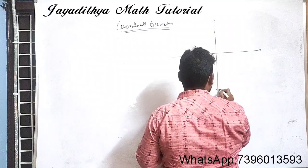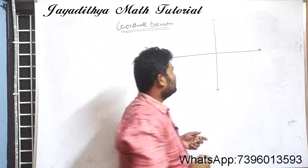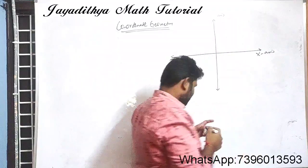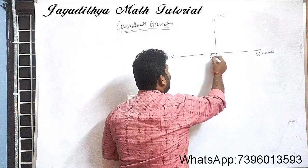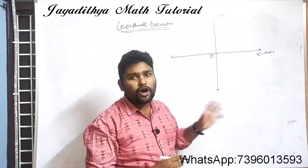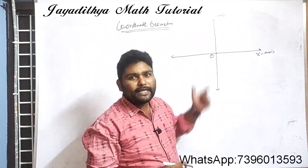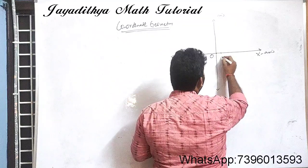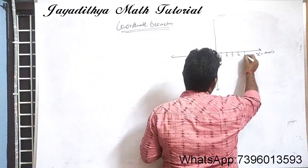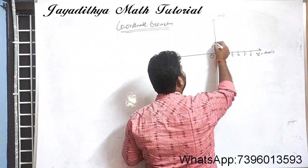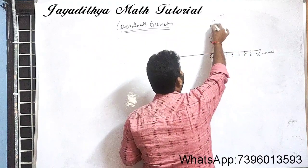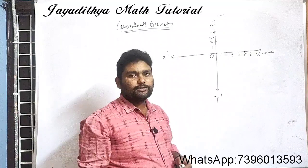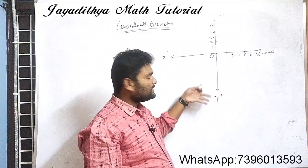A Cartesian plane is a plane in which we have two axes. The horizontal line is called the x-axis and the vertical line is called the y-axis. On the right side of the x-axis, we have the positive x-axis with values 1, 2, 3, 4, 5, 6. The upper part is the positive y-axis with values 1, 2, 3, 4, 5. We also have the negative y-axis and negative x-axis.